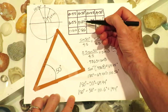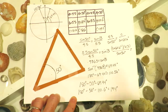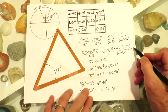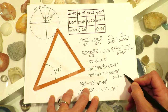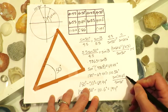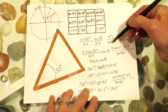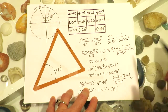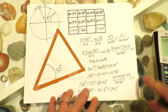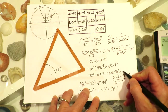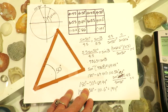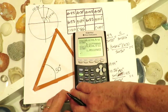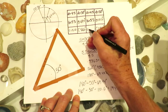For the second triangle, where B is 110.6 and C is 19.4 degrees, I set up the same ratio but with 19.4 degrees instead of 60.6. So sine of 19.4 times 4.5 divided by sine of 50 gives a length of 1.95. So length C might be 1.95 for the second triangle.